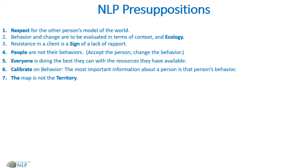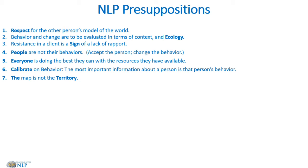Next: you're in charge of your mind and therefore your results — and I'm also in charge of my mind and therefore my results. If I can structure my thinking so that I hold a positive outcome and positive representation in my mind, and totally focus on what I want to have happen, then I can produce those kind of results. We are all in charge of our own state, dependent on that internal representation, state, and physiology.